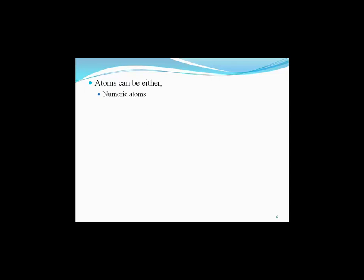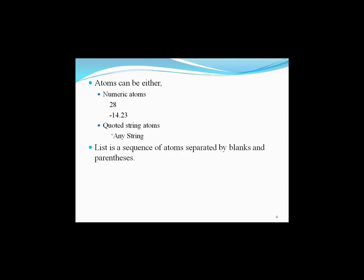There are two types of atoms: numeric atoms and quoted string atoms. Numeric atoms are, for example, 28 and -14.23. A list is a sequence of atoms separated by blanks and enclosed in parentheses. A simple list is a list that doesn't have a sublist. For example, the list (1 2 3) is a list without a sublist, so it is a simple list. In the ABCD example, AB is a sublist, so this is not a simple list.